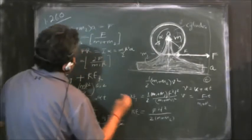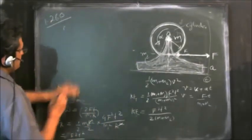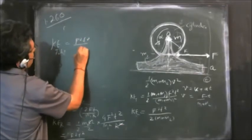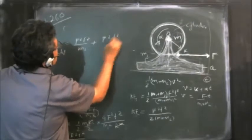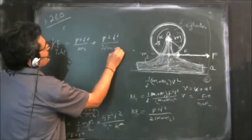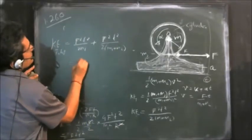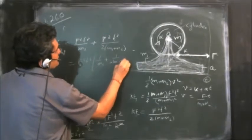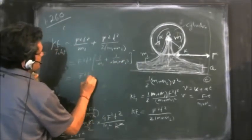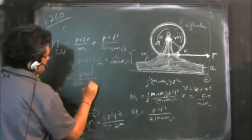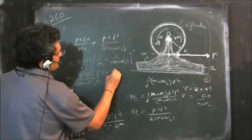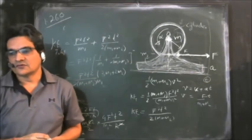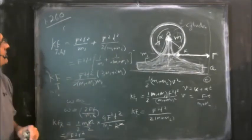Adding the two components, the total kinetic energy is: KE_total = F²T²/m1 + F²T²/[2(m1 + m2)]. This simplifies to F²T² · (3m1 + m2) / [2m1 · (m1 + m2)]. Wait, combining properly: KE_total = F²T²(3m1 + m2) / [2m1(2m1 + m2)]... This is the total kinetic energy after time T, solving both parts of the problem. Thank you.